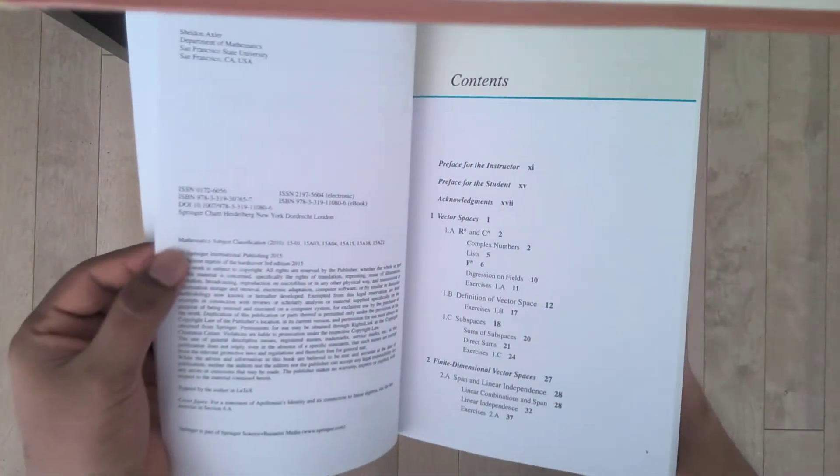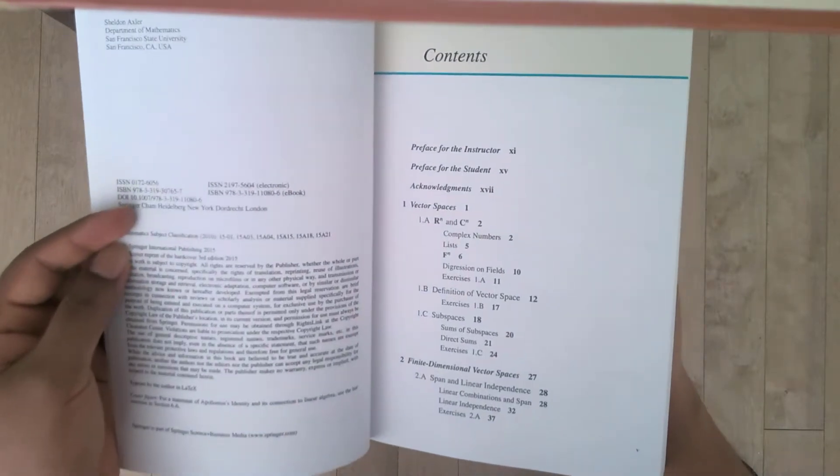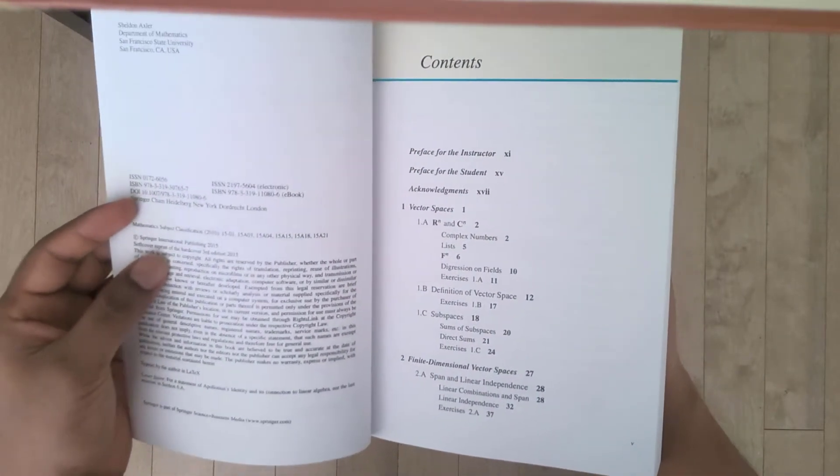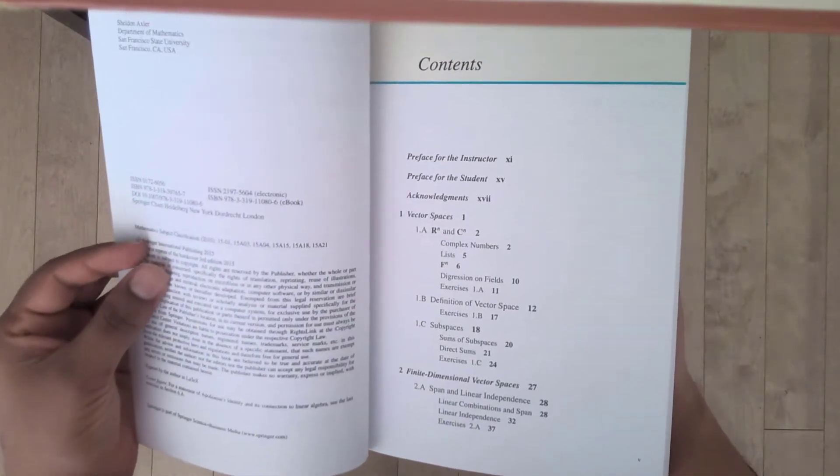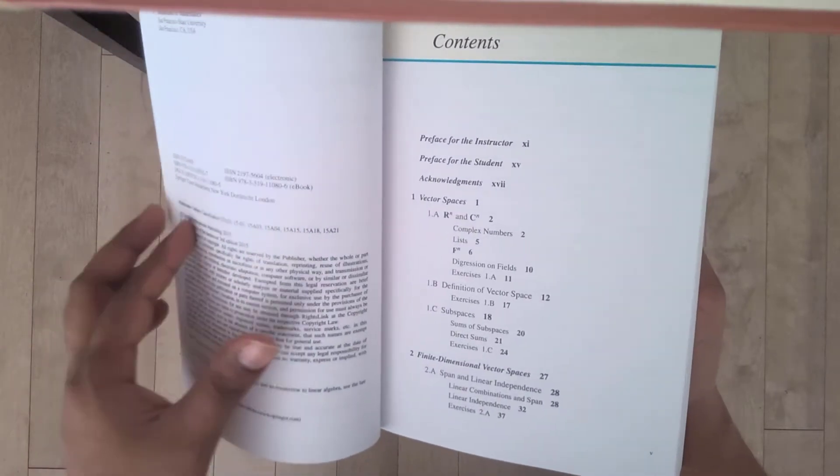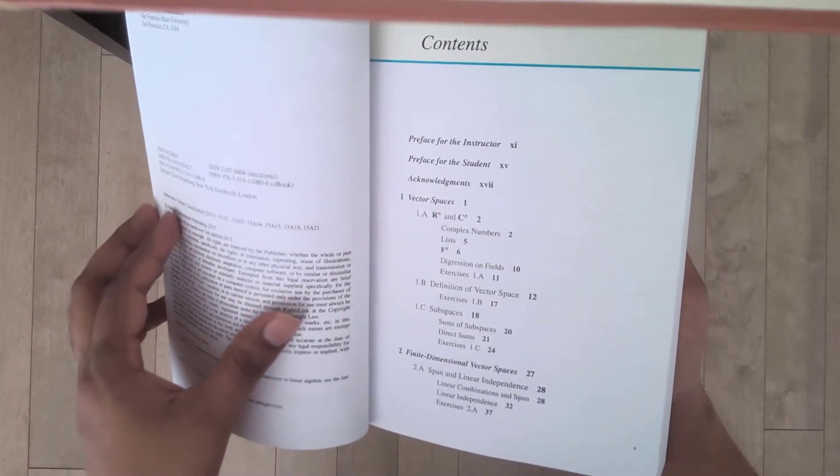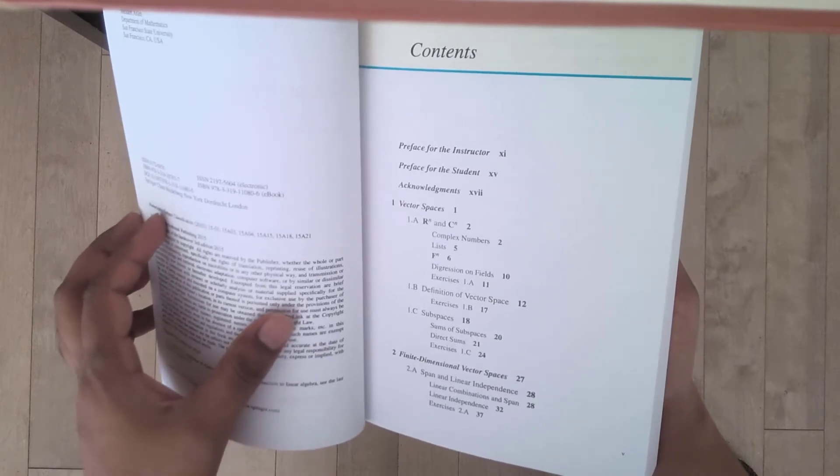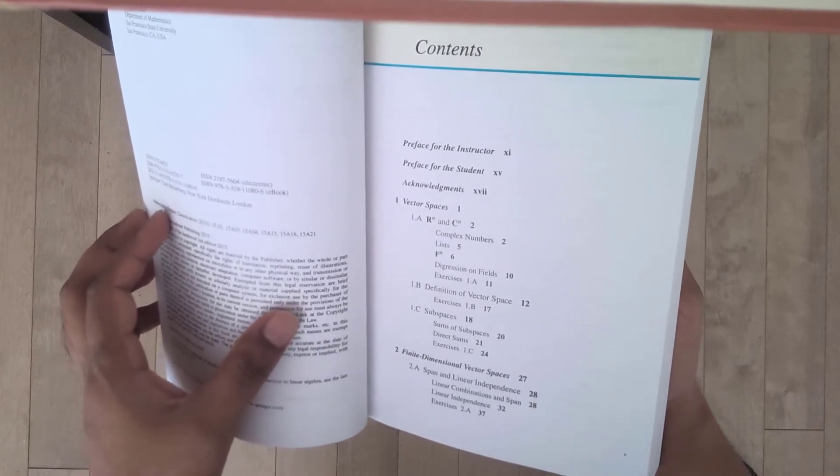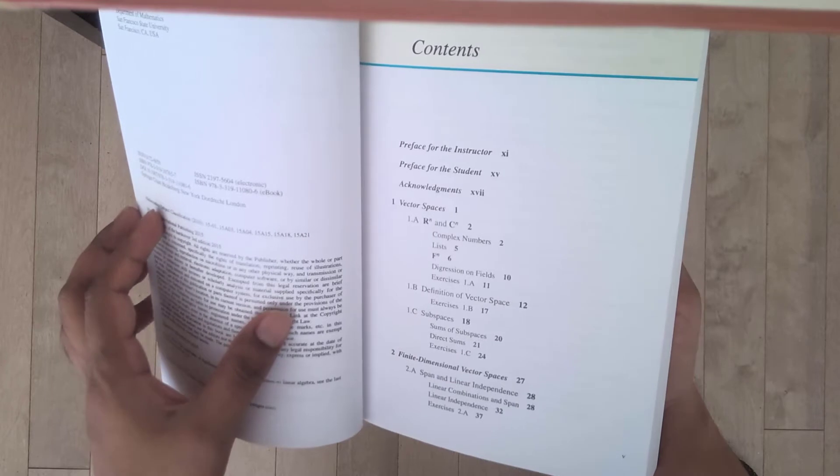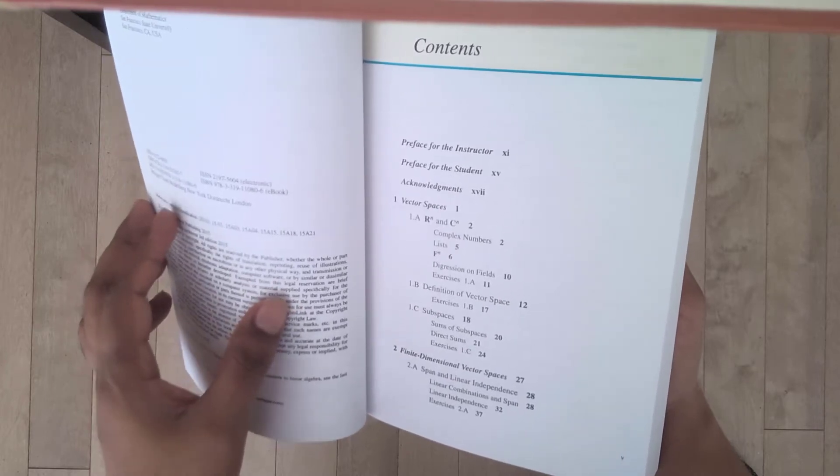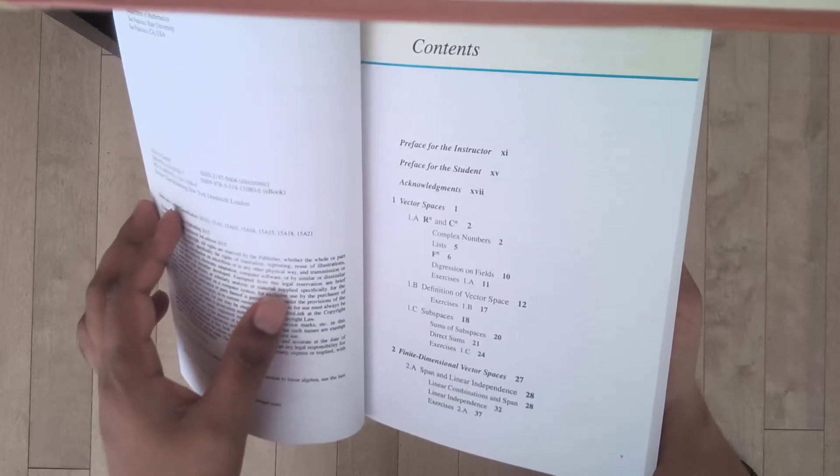Let's take a look. From the table of contents, we can see that it talks about vector spaces at first. It starts right off the bat from vector spaces. It doesn't actually start with solutions of linear equations and the matrix formulations of those things like more elementary textbooks will do. So this book is really suited for a second course in linear algebra.